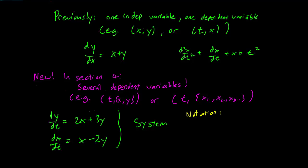In this section, since our independent variable is almost always going to be t, if you see an x prime, that means derivative with respect to t. If you see a y prime, that means derivative with respect to t. If you see an x1 prime, that's the derivative of x1 with respect to t, and so on.